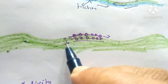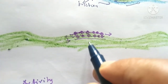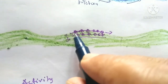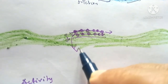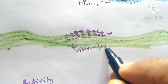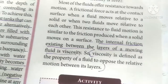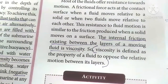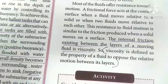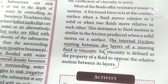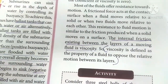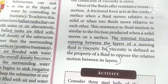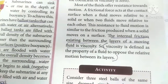The friction force between various layers of the liquid is called a viscous force. So viscosity is the property of a fluid to oppose the relative motion between its layers. The viscosity is defined as the property of a fluid to oppose the relative motion between its layers.